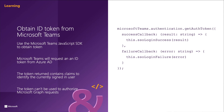If you use the ID token in your own API, you should implement accepted best practices when forwarding the token received from Microsoft Teams. This includes validating the token to ensure it was created by Azure AD, it's from the expected authority, the app is the intended audience of the token, the token hasn't expired, and the scope is set to access-as-user.